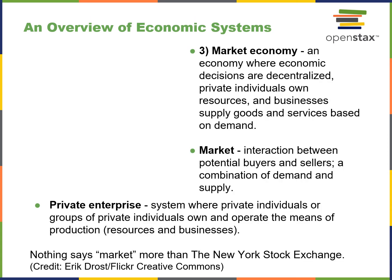A market economy is where decisions are decentralized, with a free-floating supply and demand situation. The market consists of potential buyers and sellers, and interaction between them helps define actual supply and demand. Private enterprise is where groups of individuals or an individual operate the means of production. A glaring example in this slide is the stock market.